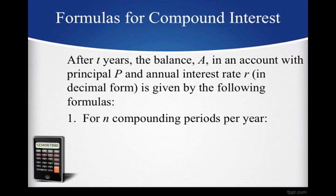The little letter T is going to represent years. So after T years, the balance, capital A, in an account with principle P—the principle is what we put down, that's the one-time amount we put in, say, to a savings account or a CD. And annual interest rate, little r, in decimal form, guys, so we're going to have to go to the decimal.